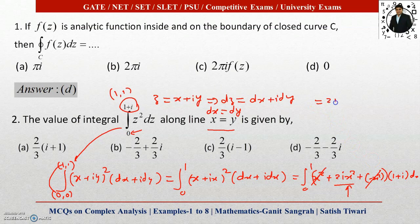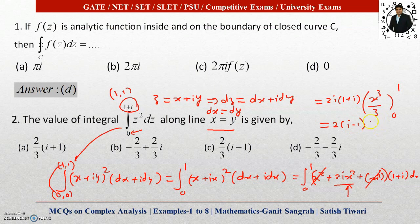After integration, applying limits from 0 to 1 gives 1/3. Multiplying 2i by (1+i): i × i = i² = −1, so 2i(1+i) = 2(i − 1) = 2i − 2. The answer simplifies to (2/3)(i − 1), so option C is correct.